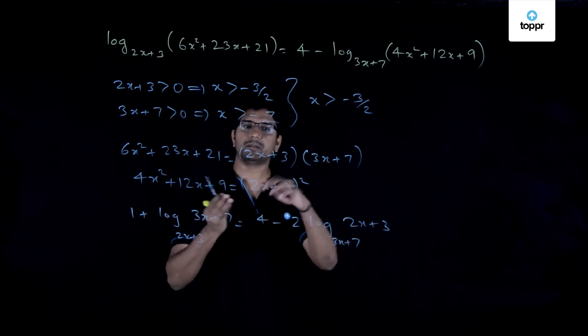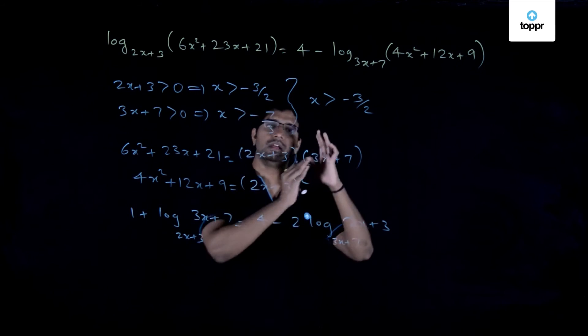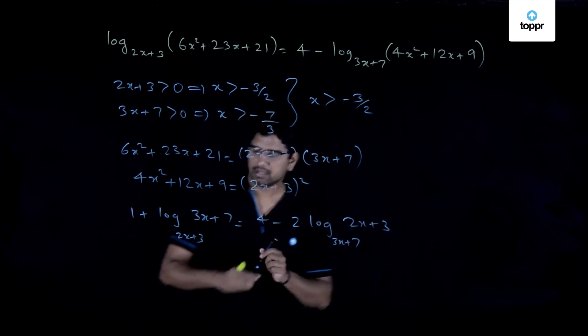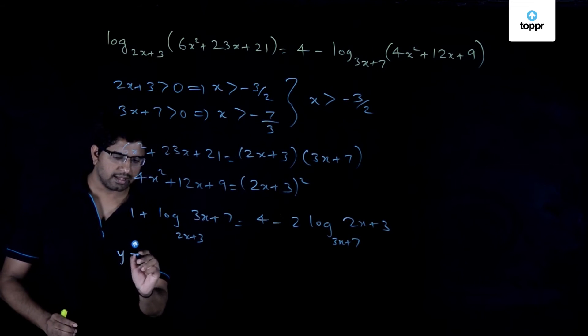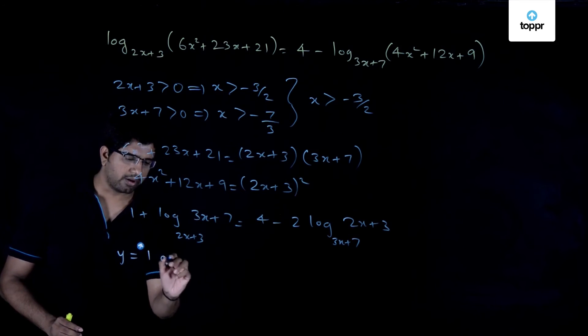So if you let this expression be equal to y, then this expression becomes equal to 1/y. And further by cross multiplying and things like that, you get a quadratic equation. You solve it, you will get y is equal to 1 or 2.